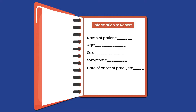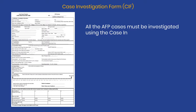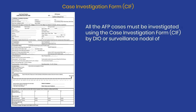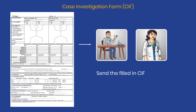Additional information required includes symptoms, date of onset of paralysis, address, and mobile number. All AFP cases must be investigated using the Case Investigation Form (CIF) by DIO or surveillance nodal officers within 48 hours of case notification. Send the filled CIF to the DIO or SMO office on the same day.